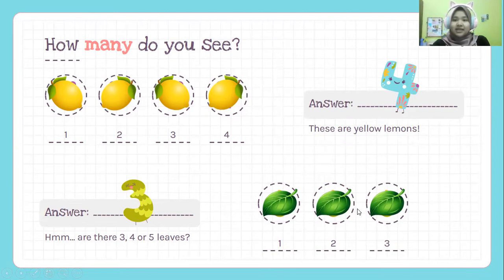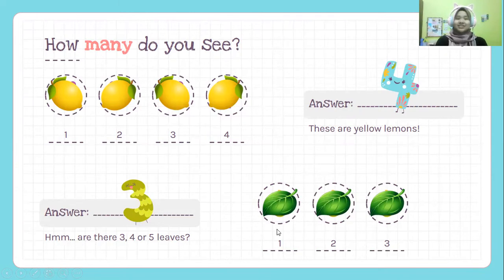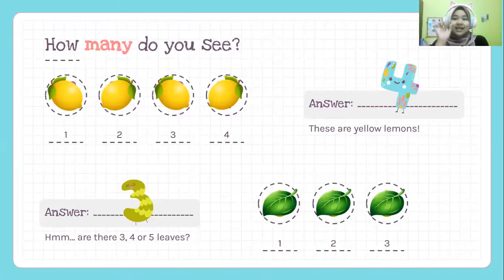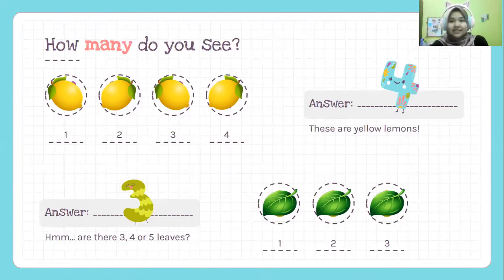Next, how many leaves are there? Are there three, four, or five leaves? That's right. There are three leaves. Good job. Now we are going to do another activity, which is teacher wants you to represent dots and numbers.